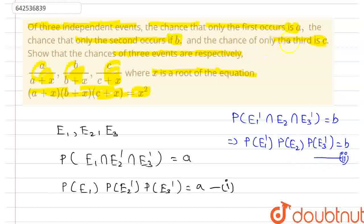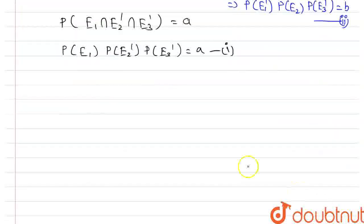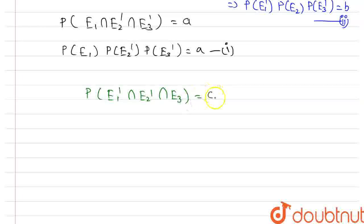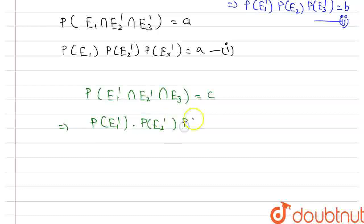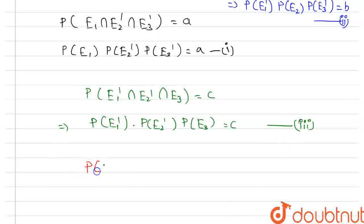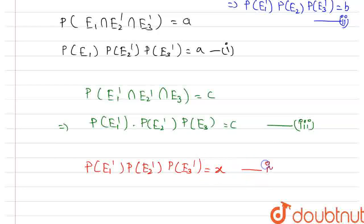Again, the chance that only the third one occurs is given as C. So this will be equal to probability of E1 complement intersection E2 complement intersection E3, which equals C. Since E1, E2 and E3 are independent events, it equals probability of E1 complement into probability of E2 complement into probability of E3, and this is equal to C. Let us denote it as equation number 3. Now, let us suppose that probability of E1 complement into probability of E2 complement into probability of E3 complement equals X. Let us denote it as equation 4.